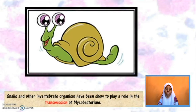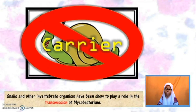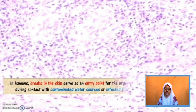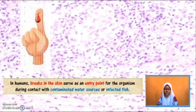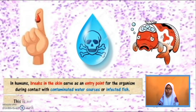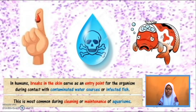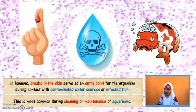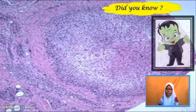Snails and other invertebrate organisms have been shown to play a role in the transmission of mycobacterium. And in humans, breaks in the skin serve as an entry point for the organism during contact with contaminated water sources or infected fish. This is most common during cleaning or maintenance of aquariums.